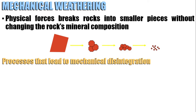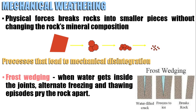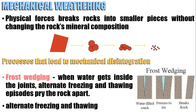There are processes that lead to mechanical disintegration. The first one is frost wedging. This is when water gets inside the joints, then alternate freezing and thawing episodes pry the rock apart. Remember, water expands 9% as it freezes. So when water works its way into cracks or voids in rock and then freezes, the water expands and breaks the rocks into angular fragments. The important process here is the alternate freezing and thawing.